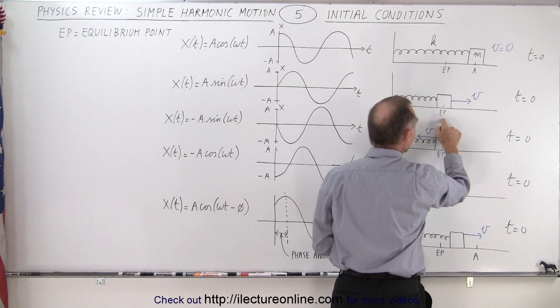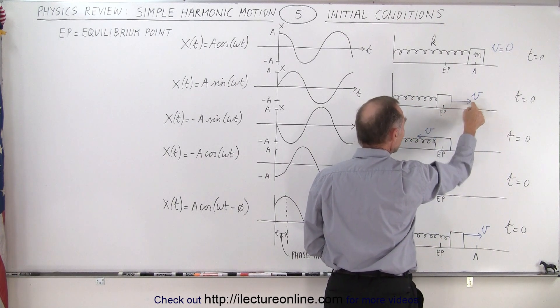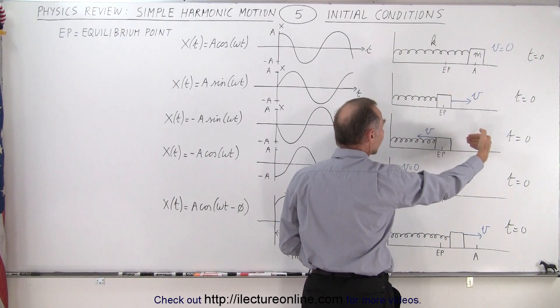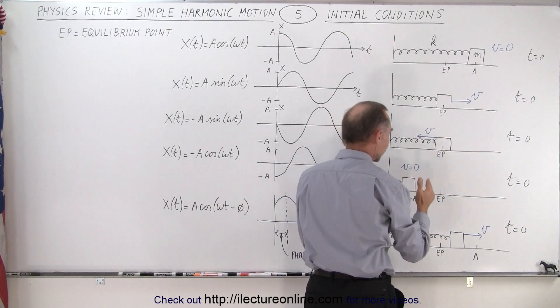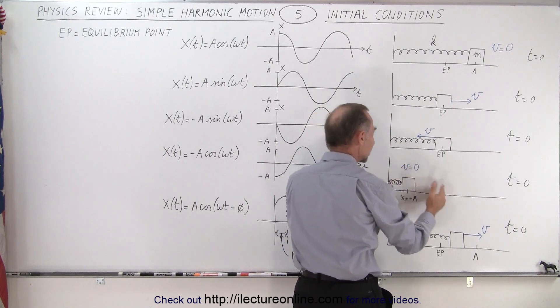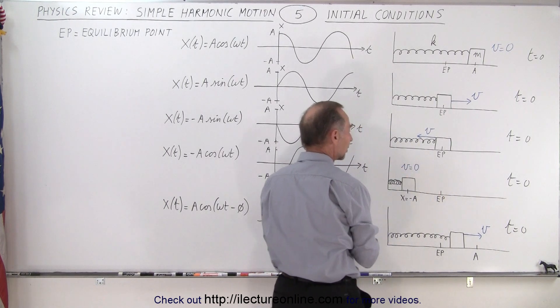In the second case it's going through the equilibrium point at some velocity to the right. In the third case it's moving through the equilibrium point with velocity to the left. The fourth case is when the object is at the maximum distance to the left from the equilibrium point, velocity equals zero.